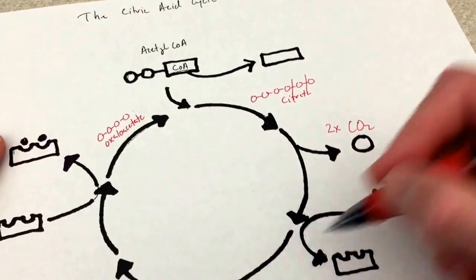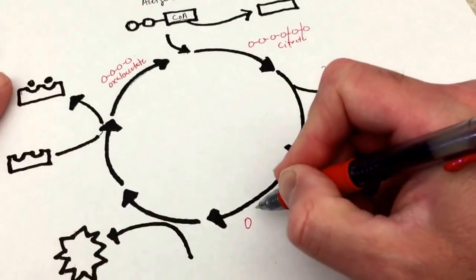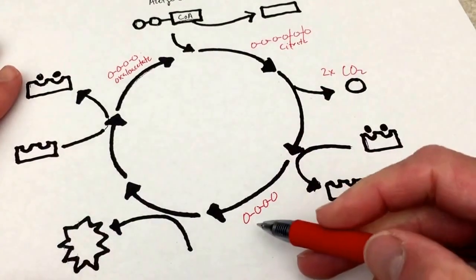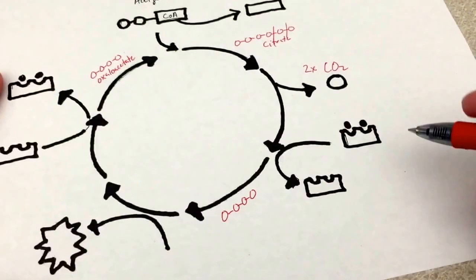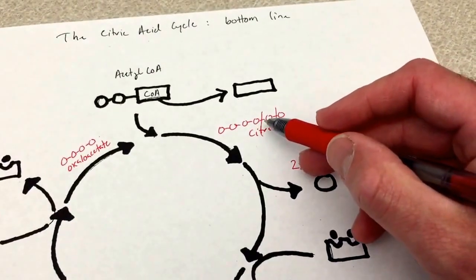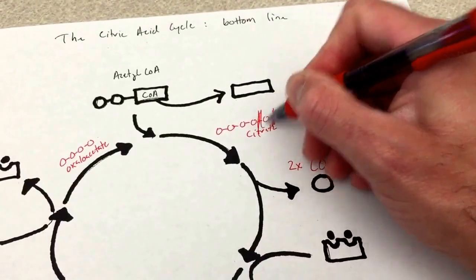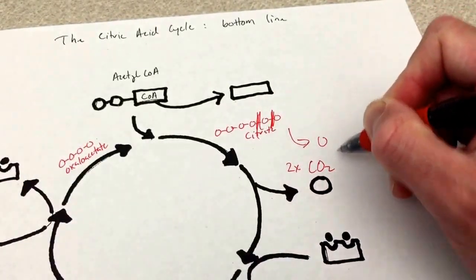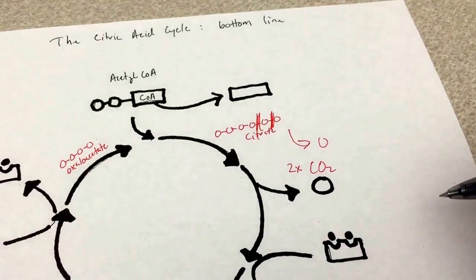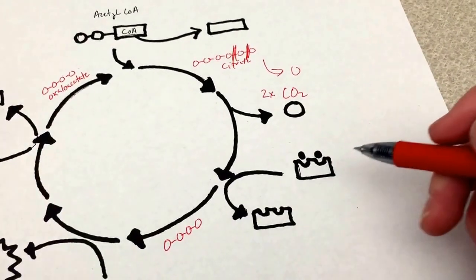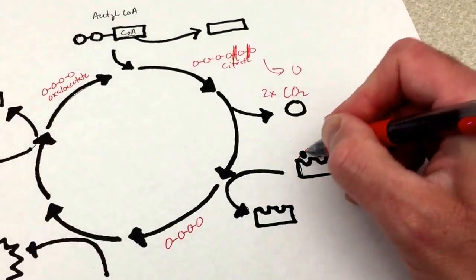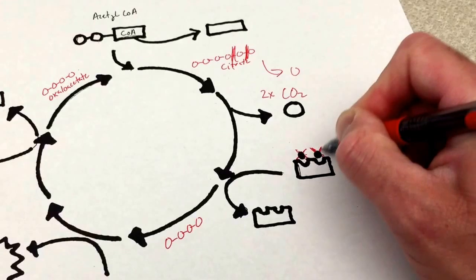That is going to leave us with a four carbon molecule. Now what do we do with the electrons in these bonds after these carbons go away as CO2 molecules? Here I apologize, this is a mistake.